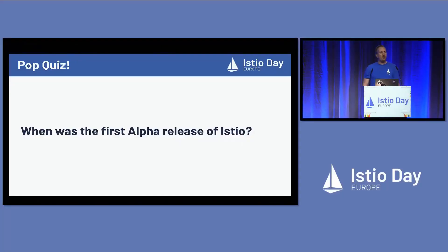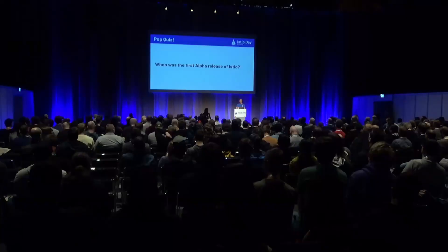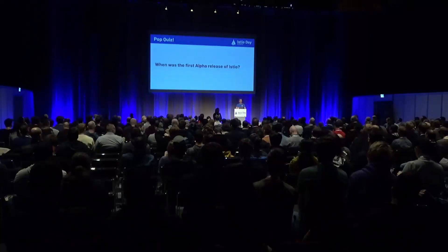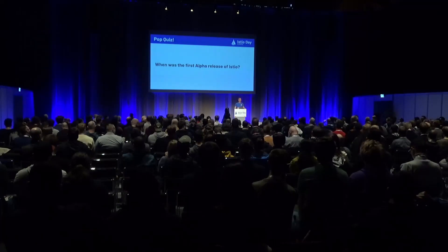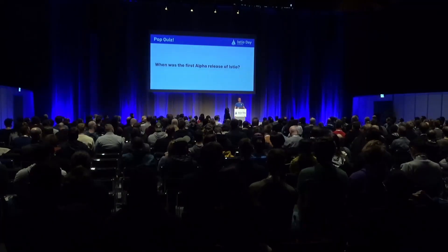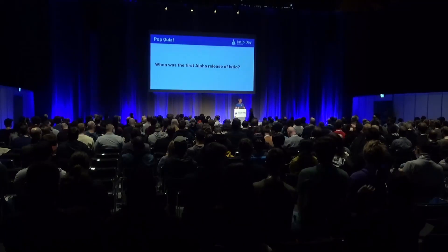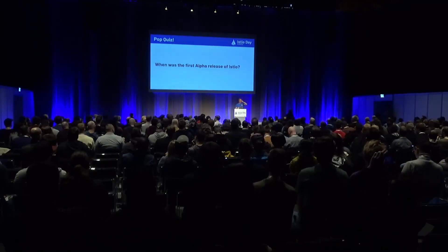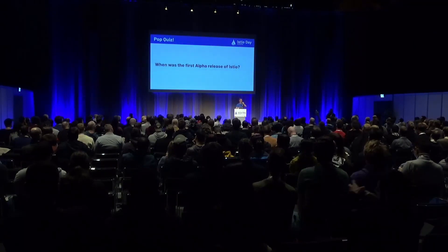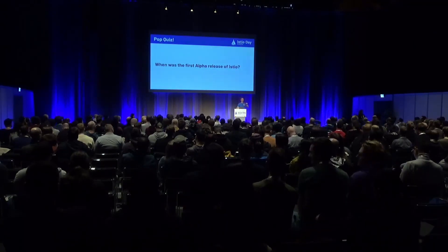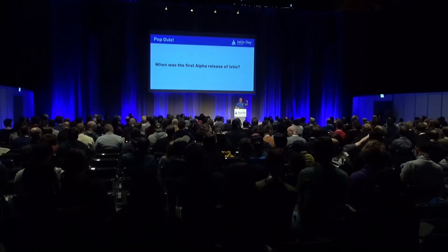When was the first alpha release of Istio? Anybody been with us for that long? 2017 is correct — yes, that's right. May 10th, 2017 was our first alpha release in the Istio project.